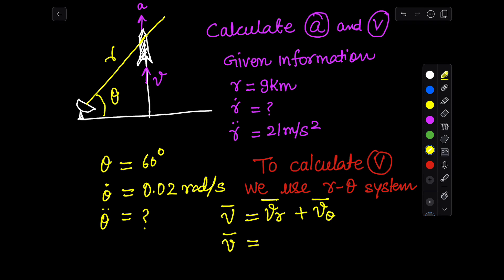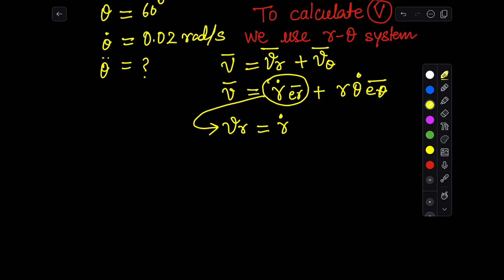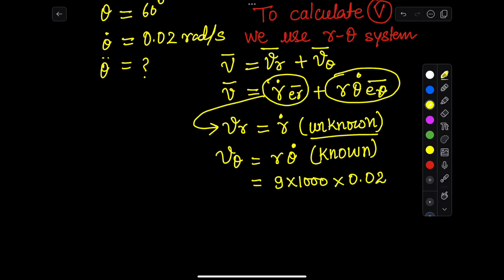We will utilize the r-theta coordinate system formulas. The velocity formula is: velocity equals the velocity in the radial direction plus the velocity in the theta direction. Here, vr equals r-prime, which is unknown. For v-theta, the values are given in the problem: 9000 meters multiplied by 0.02.